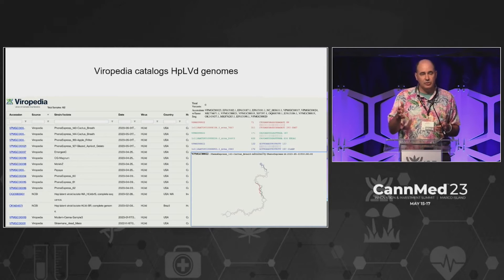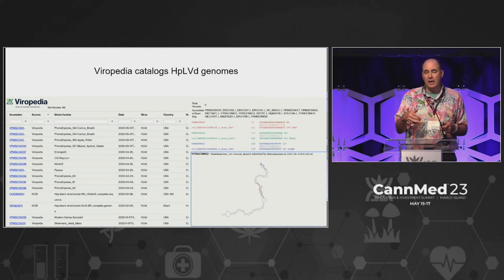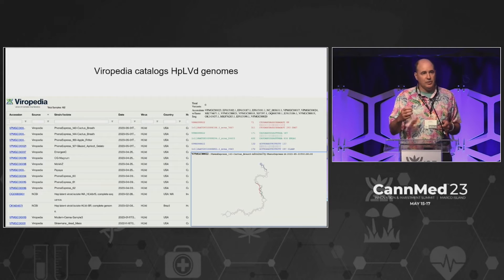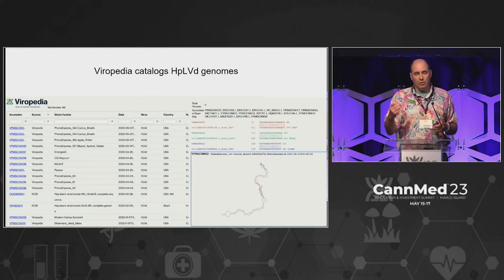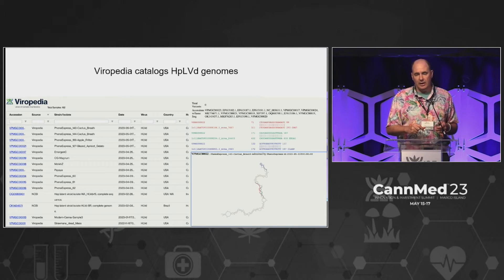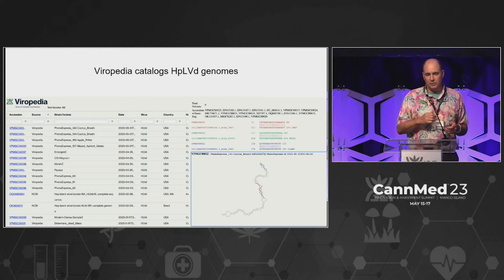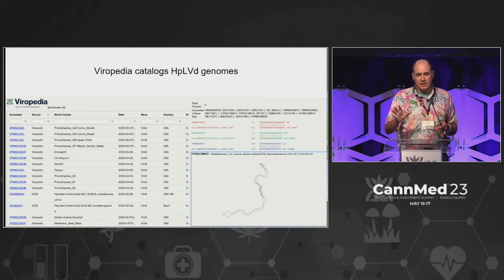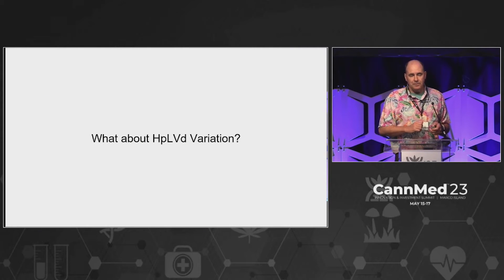Three of the most common genes that we find is a gene known as COG7, which is involved in shoot apical meristem growth. There's another one called expansin, which is involved in cell development and growth, and another one called CLASP. There are many genes that this is potentially interacting with.